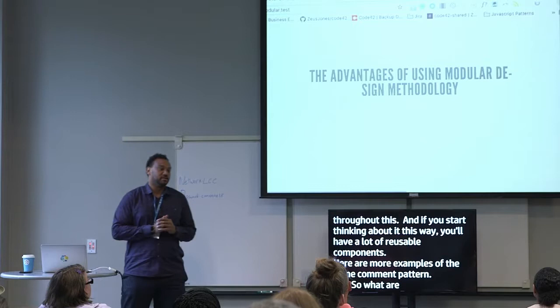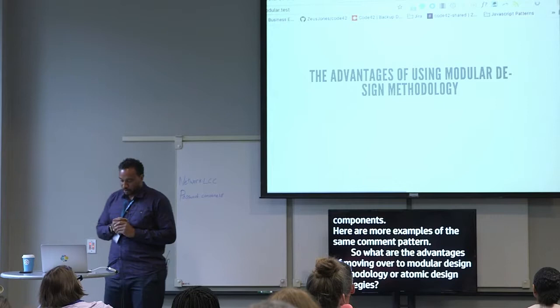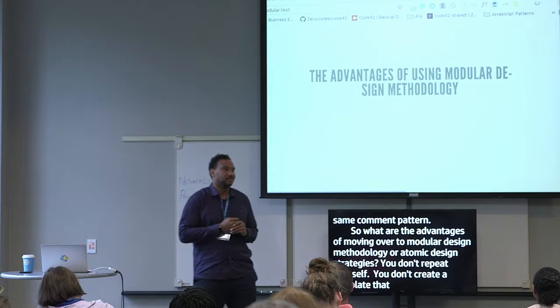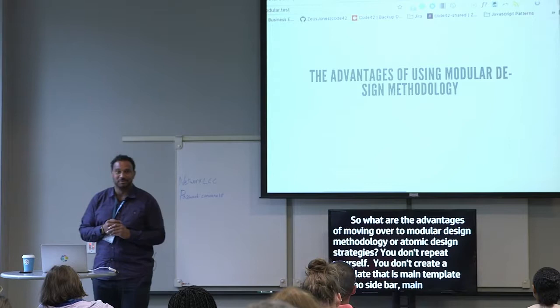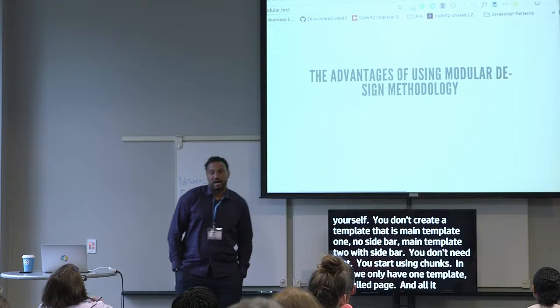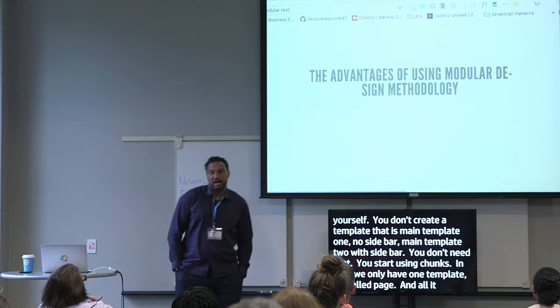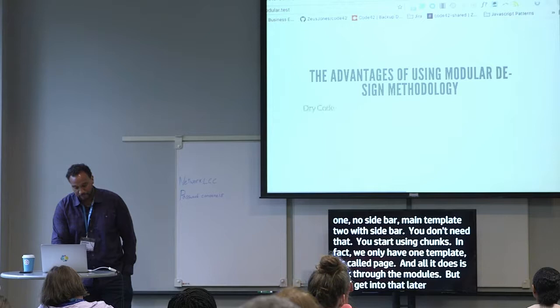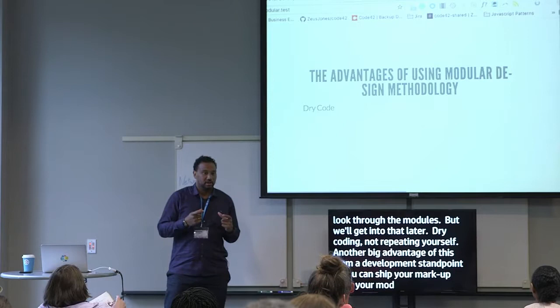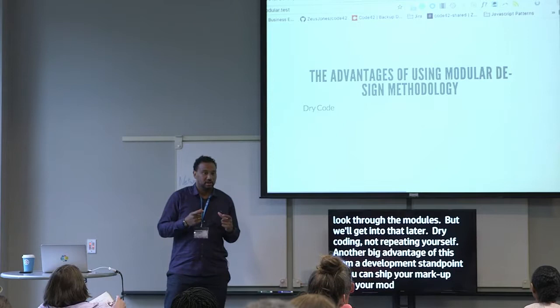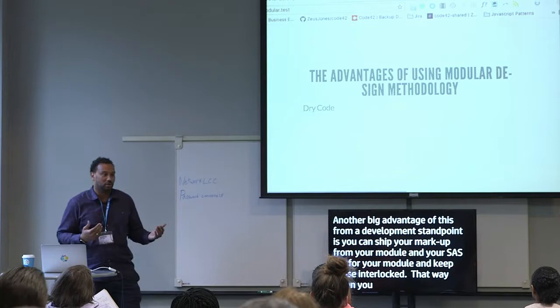What are the advantages of moving over to a modular design methodology or atomic design strategy? You don't repeat yourself. You don't create template-one-no-sidebar, template-two-with-sidebar — you don't need that. You start using chunks. In fact, we only have one template called 'page,' and all it does is loop through the modules. DRY code — not repeating yourself. Another big advantage from a development standpoint is you can ship your markup for your module and your Sass file for your module, keep those interlocked. When you start a new project, you can always pull from your old module library — you're not starting anew.